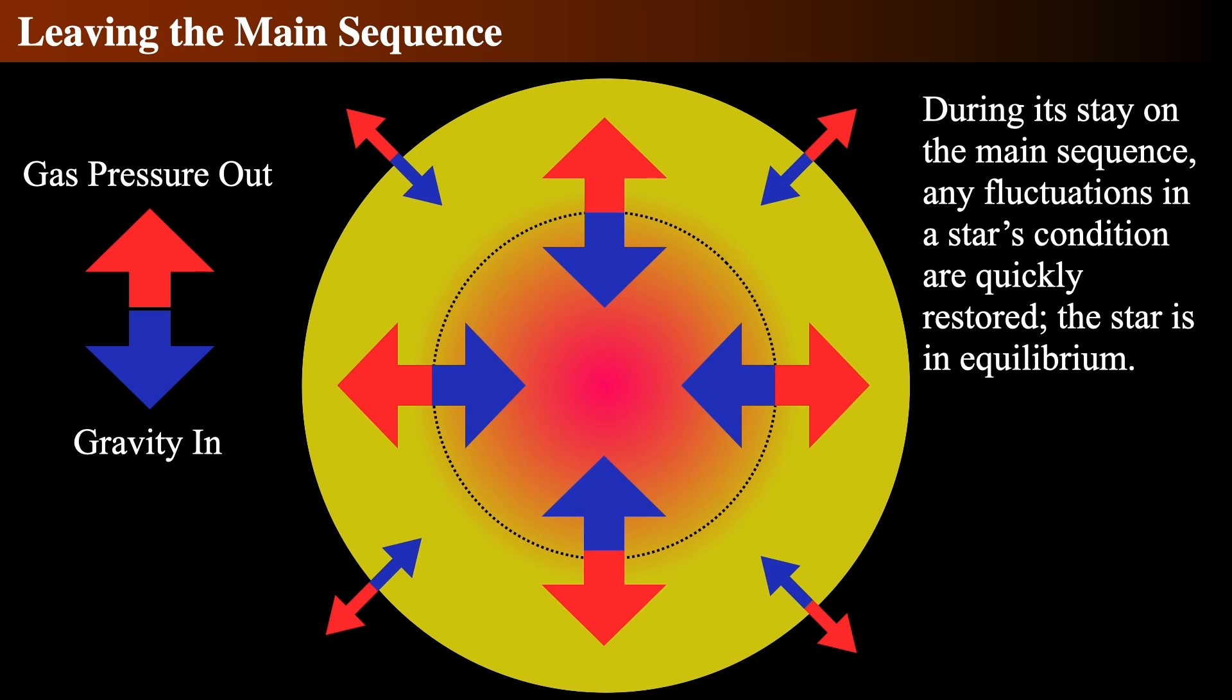On the main sequence, these two equilibria hold true. But when the core starts to run out of fuel, then both balances begin to break down and the star leaves the main sequence.